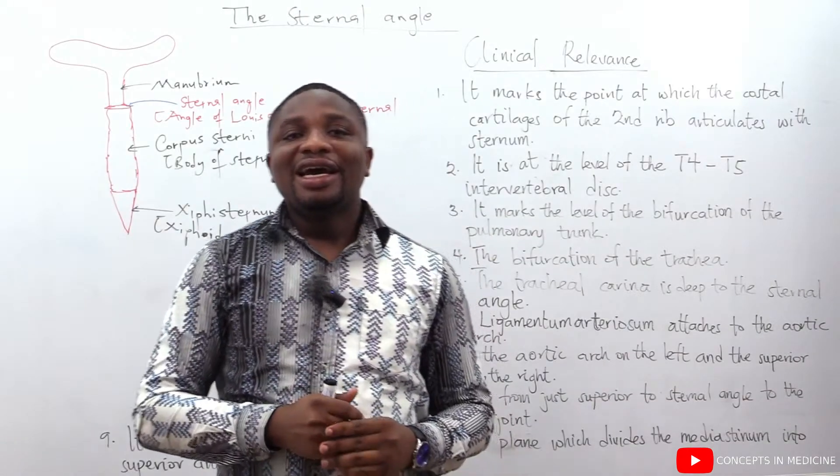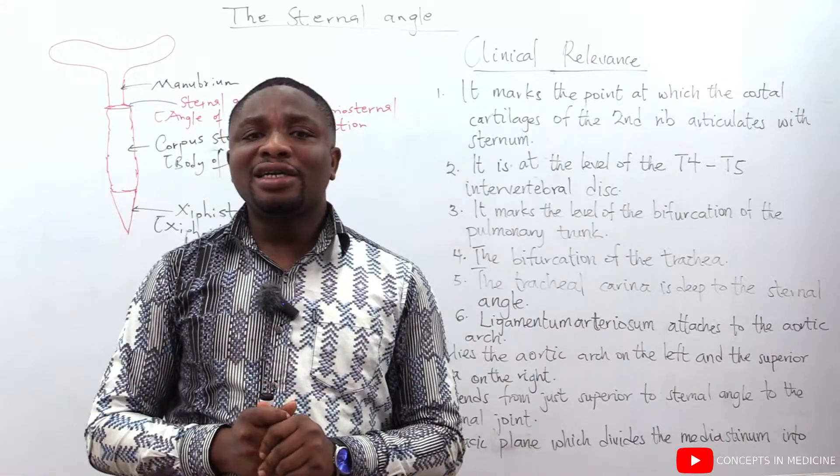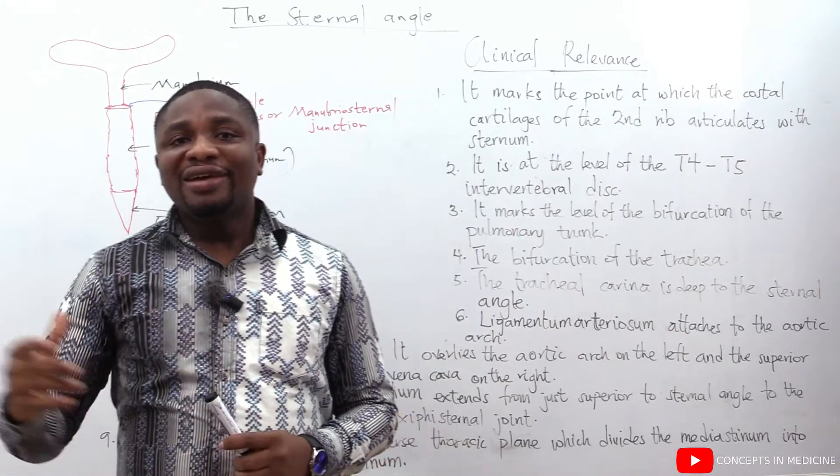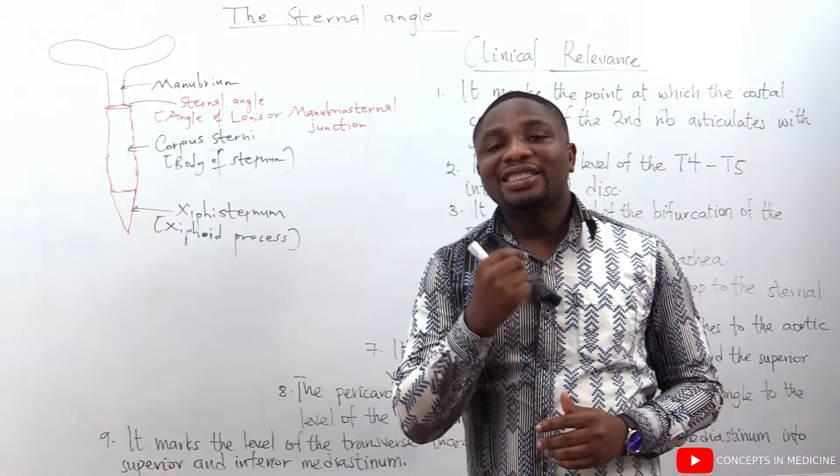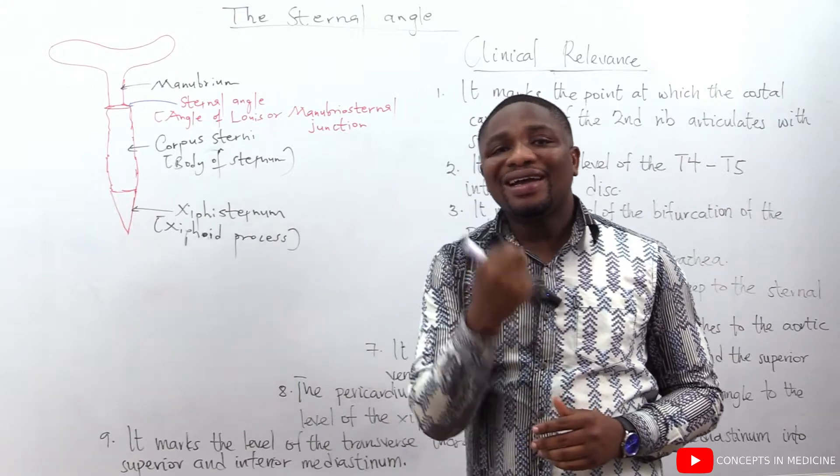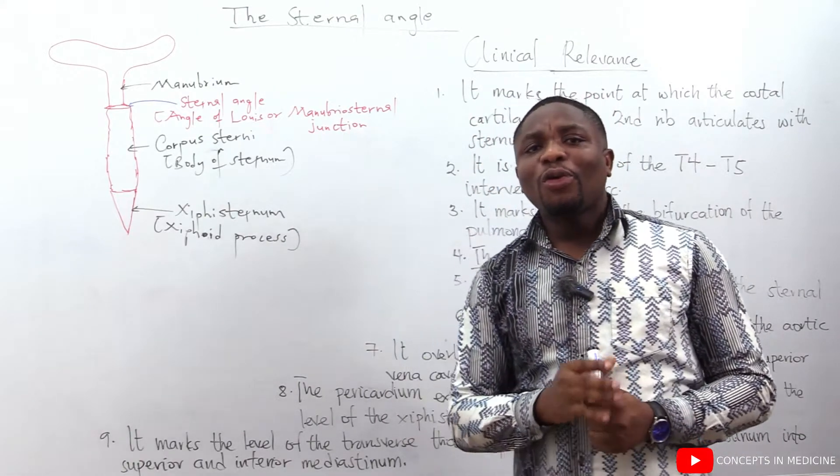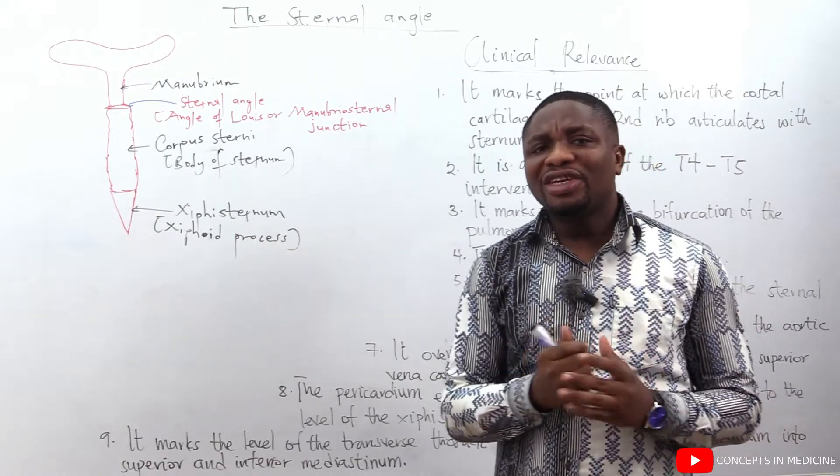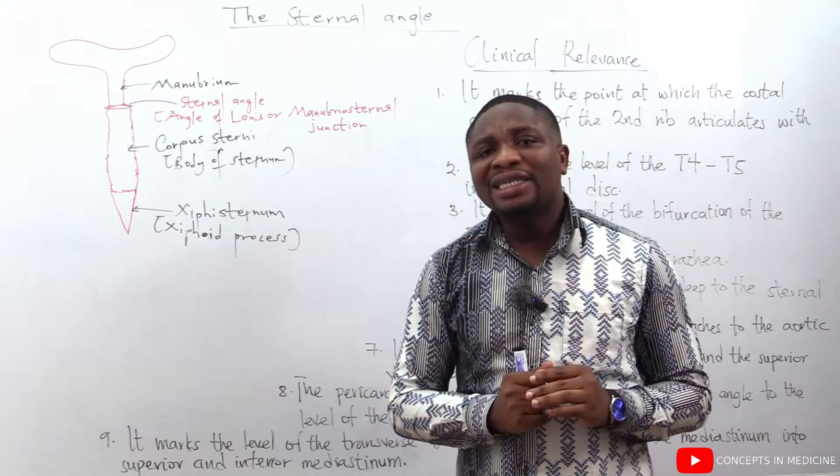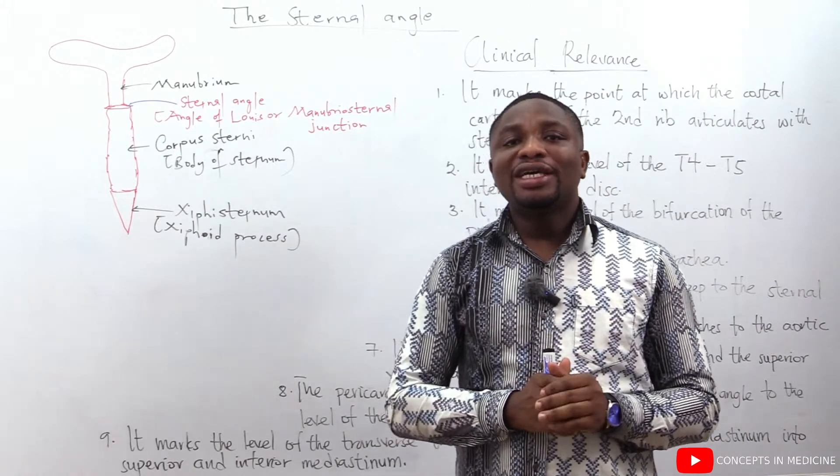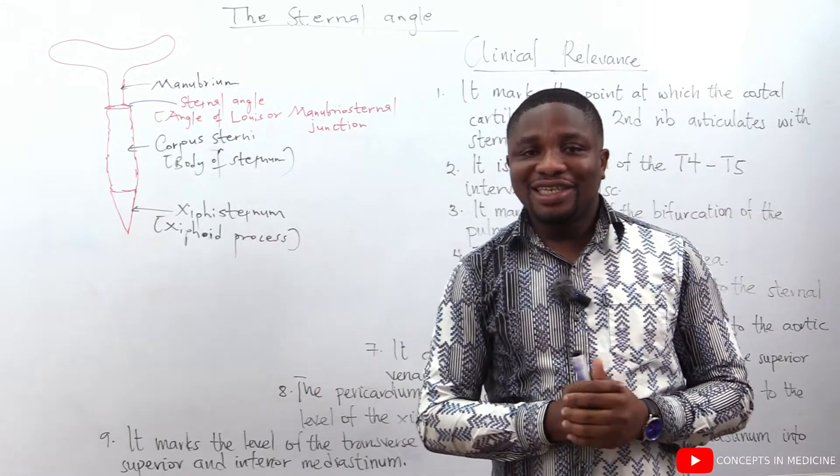The next one, the pericardium extends from just superior to the sternal angle to the level of the xiphisternal joint. Then finally, the sternal angle or what we call the manubriosternal junction corresponds to the level of the transverse thoracic plane that divides the mediastinum into the superior and inferior mediastinum.